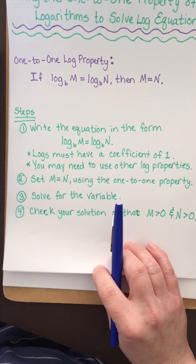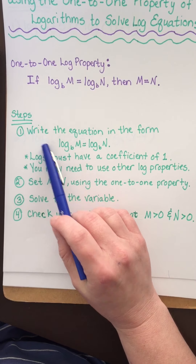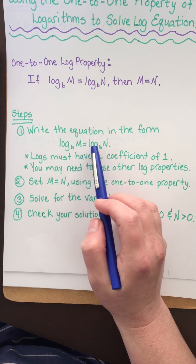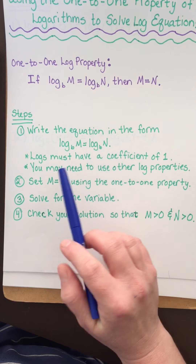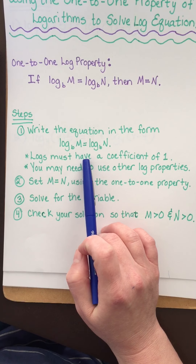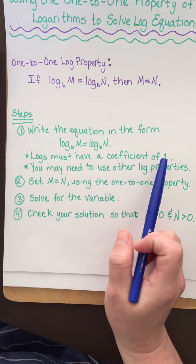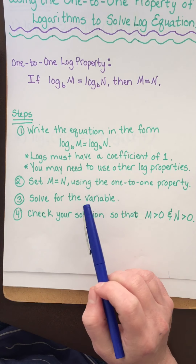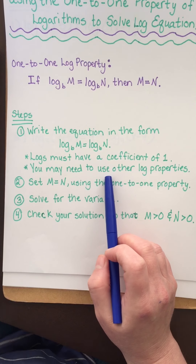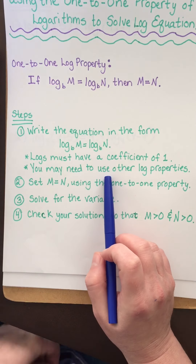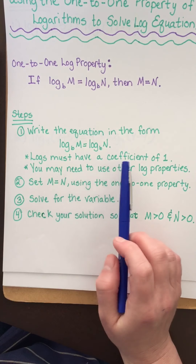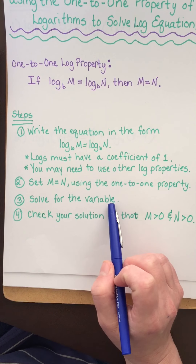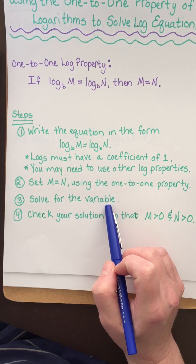So we have four steps. The first thing you do is write the equation in the form of log base B of m equals log base B of n. The logs have to have a coefficient of one before you can invoke the one-to-one log property. You may have to go back and use some of your other log properties. After that, you set m equal to n using the one-to-one property. Then you solve for the variable.